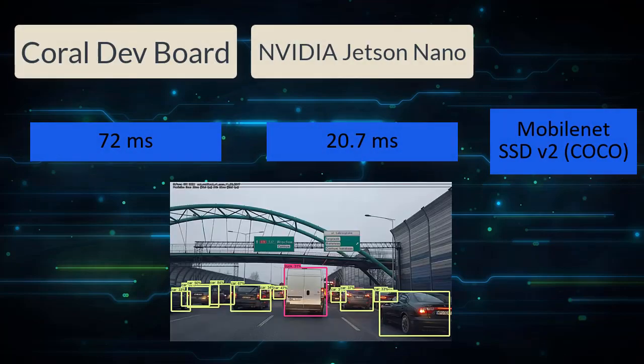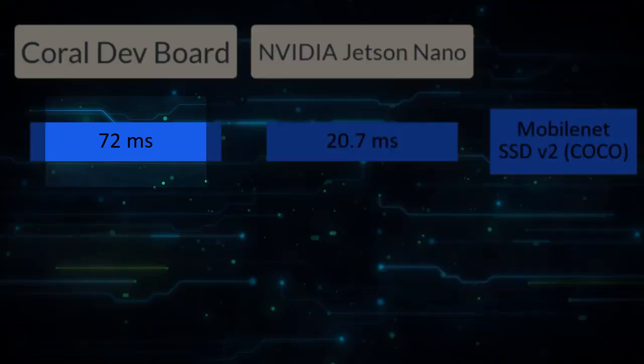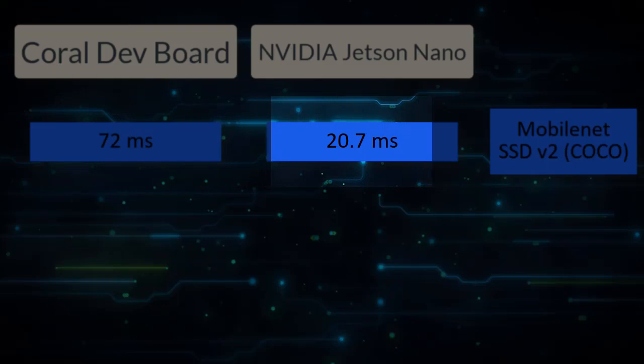Here are the results of my own benchmarks for MobileNet SSD version 2 — an object detection network trained on the COCO dataset with 300x300 input resolution in TensorFlow. For Jetson Nano, the module was optimized and executed with TF-TRT (TensorFlow-TensorRT), and the Google board used TensorFlow Lite with a pre-trained model provided by Google. NVIDIA Jetson Nano achieves 72 milliseconds per inference, while Google Coral Dev Board is more than three times faster at 20.7 milliseconds per inference.